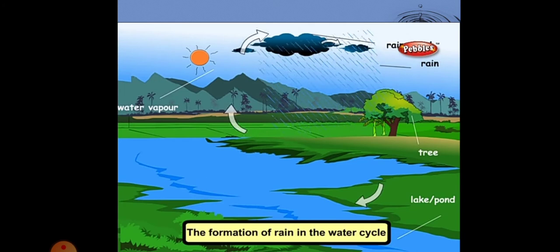The formation of rain in the water cycle is a natural example of the change of state of matter. In the water cycle, water from the water bodies gets heated up by the sun and gets evaporated — this is called vaporization. Water vapor rises up, cools, and forms water droplets — this is called condensation. These water droplets together form big water drops, which fall as rain.